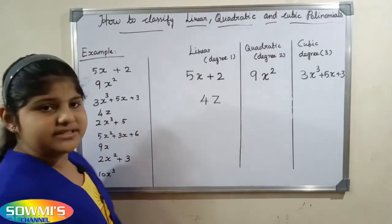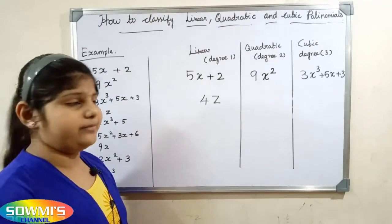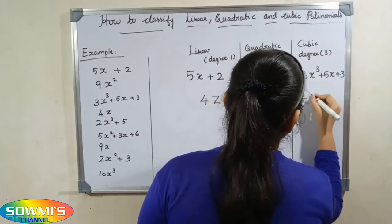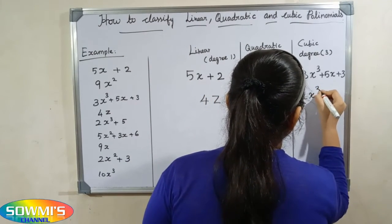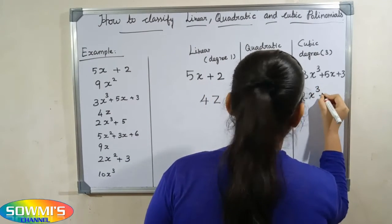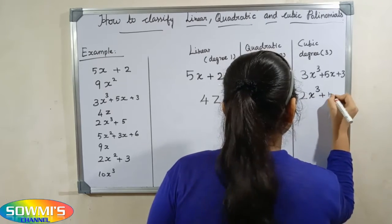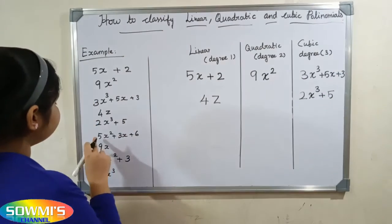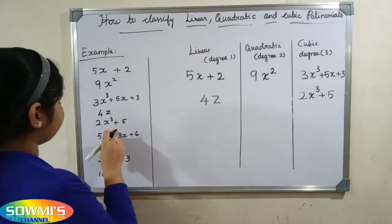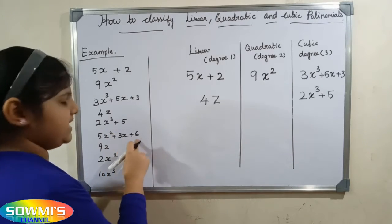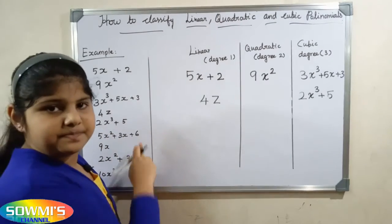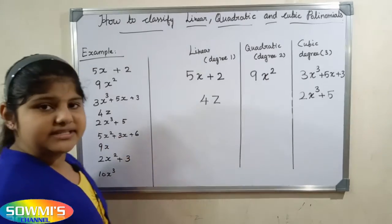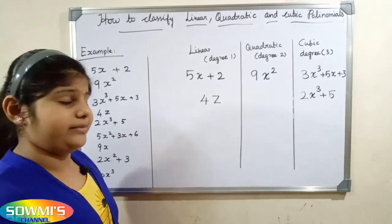4x cubed plus 5 — here the degree is 3, so this is a cubic polynomial. 5x squared plus 3x plus 6 — here the degree is 2, so this is a quadratic polynomial.